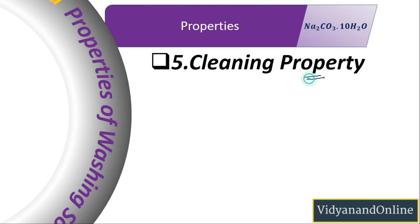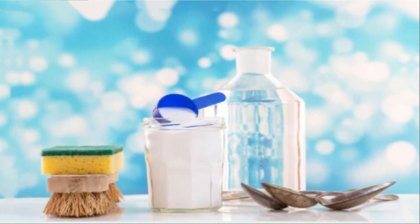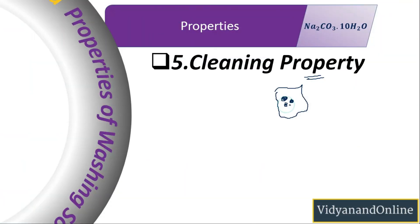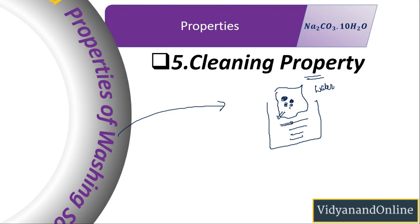Washing soda has a cleansing property. A dirty cloth has grease and oil stains — grease and oil are not naturally water soluble. But if you add the dirty cloth into a washing soda solution, the washing soda attacks the dirt and grease, making them water soluble products, which are then washed away on rinsing with water. So washing soda makes grease and oil water soluble.